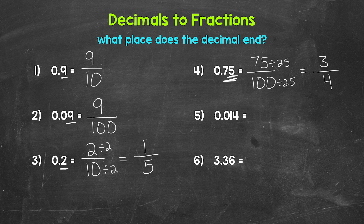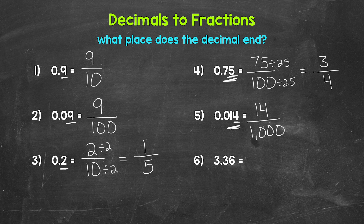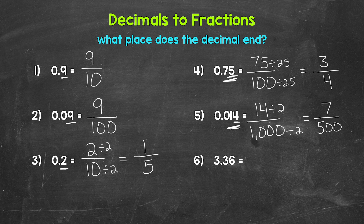Moving on to number five, we have 0.014 — 14-thousandths. We have 14 to the right of the decimal, and this ends in the thousandths place. So 14 is our numerator and 1,000 is our denominator — 14 over 1,000. We can simplify: we have a greatest common factor of 2. 14 divided by 2 is 7, and 1,000 divided by 2 is 500. So seven over 500. The only common factor between seven and 500 is one, so this is in simplest form.